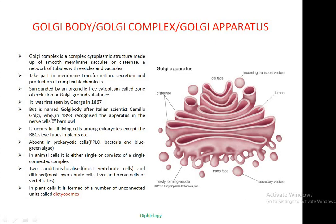The Golgi body was first seen by George in 1867, but was named after Italian scientist Camillo Golgi, who in 1898 recognized the apparatus in the nerve cell of an owl. It occurs in all living eukaryotic cells except RBCs and sieve tubes in plants. It is absent in prokaryotic cells like PPLO, bacteria, and blue-green algae.